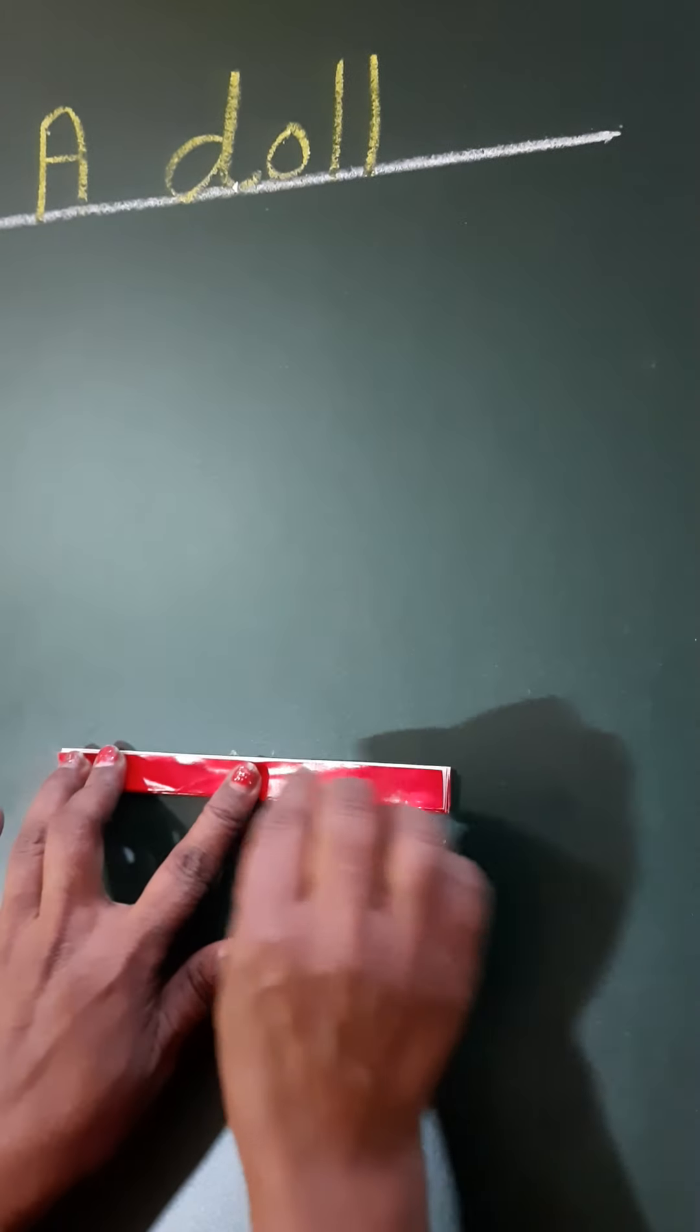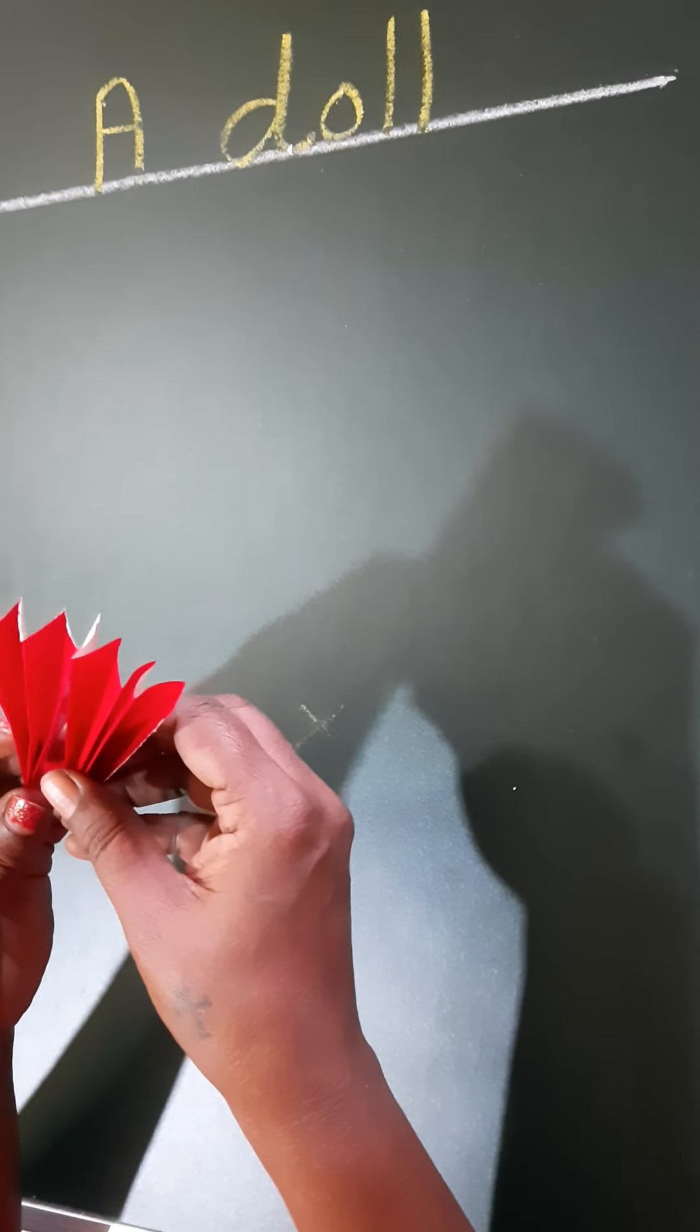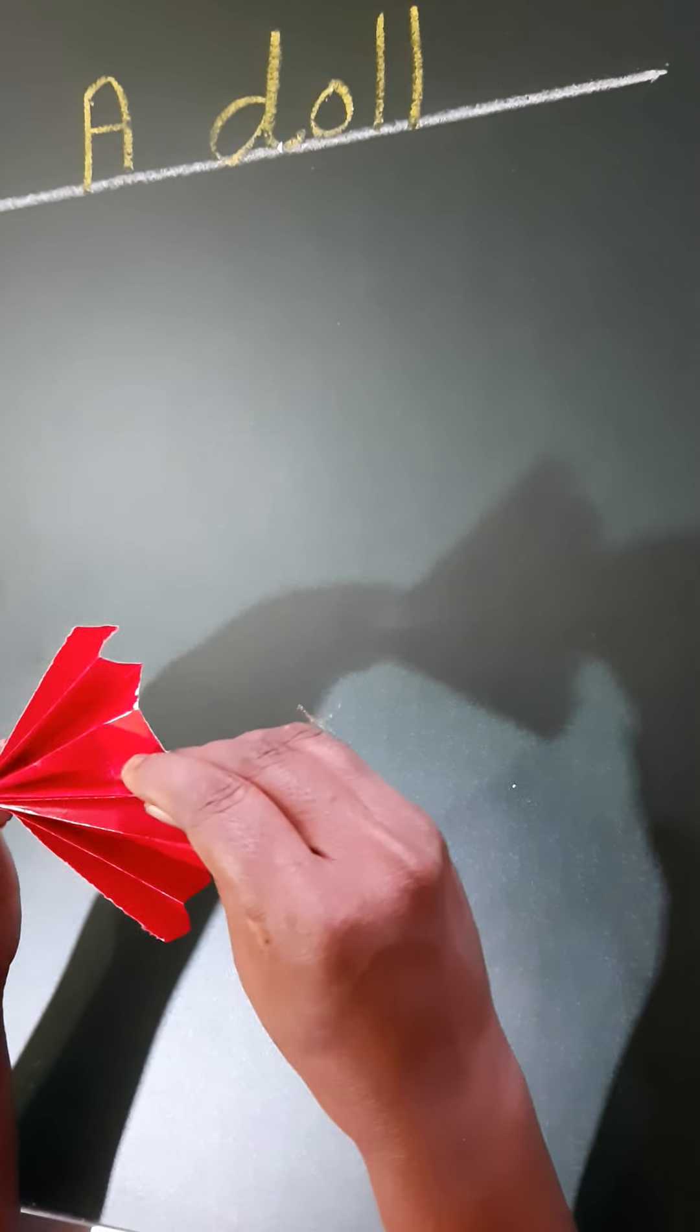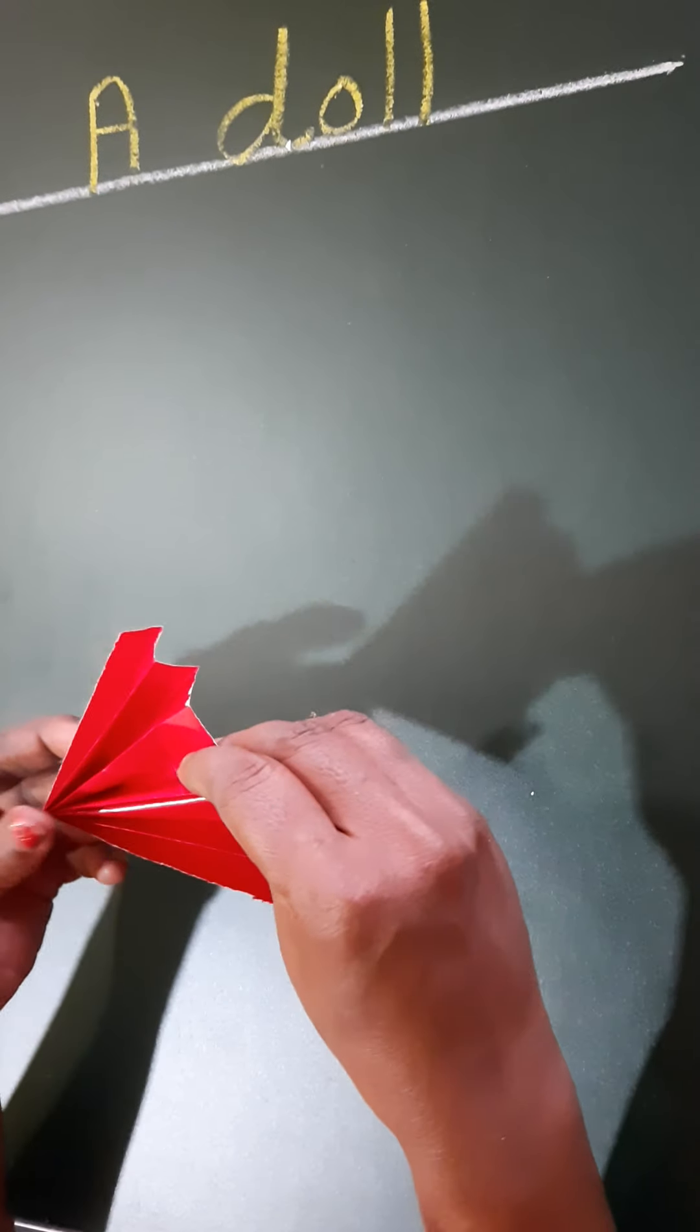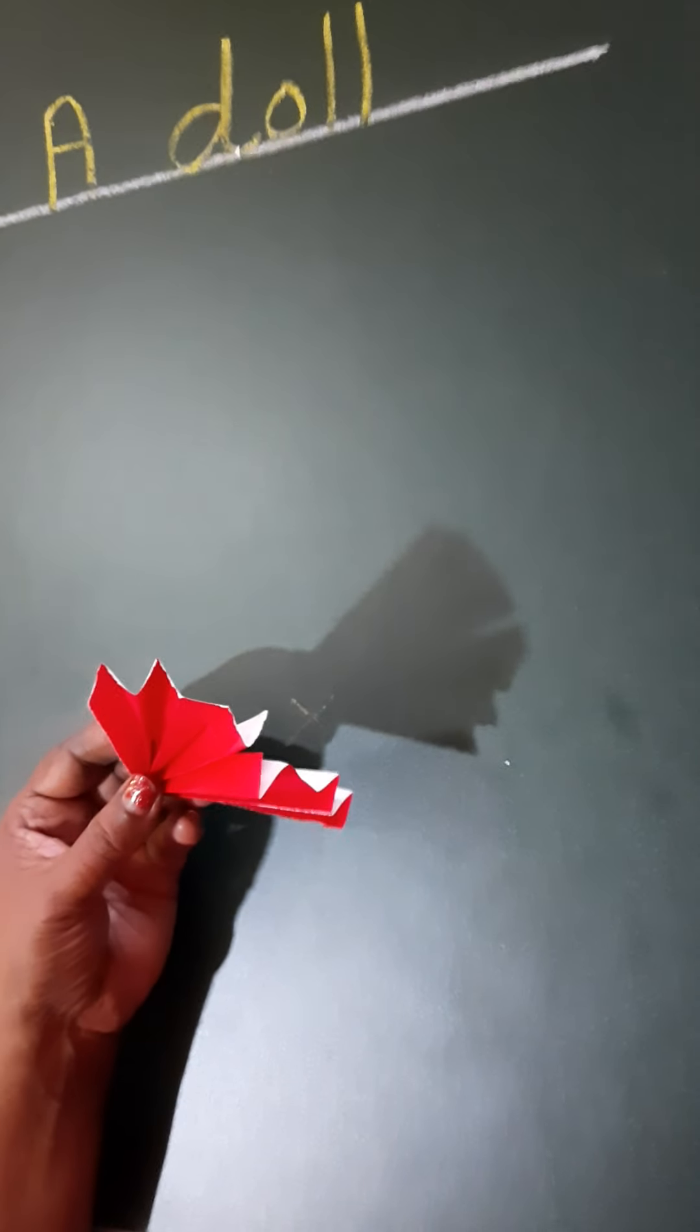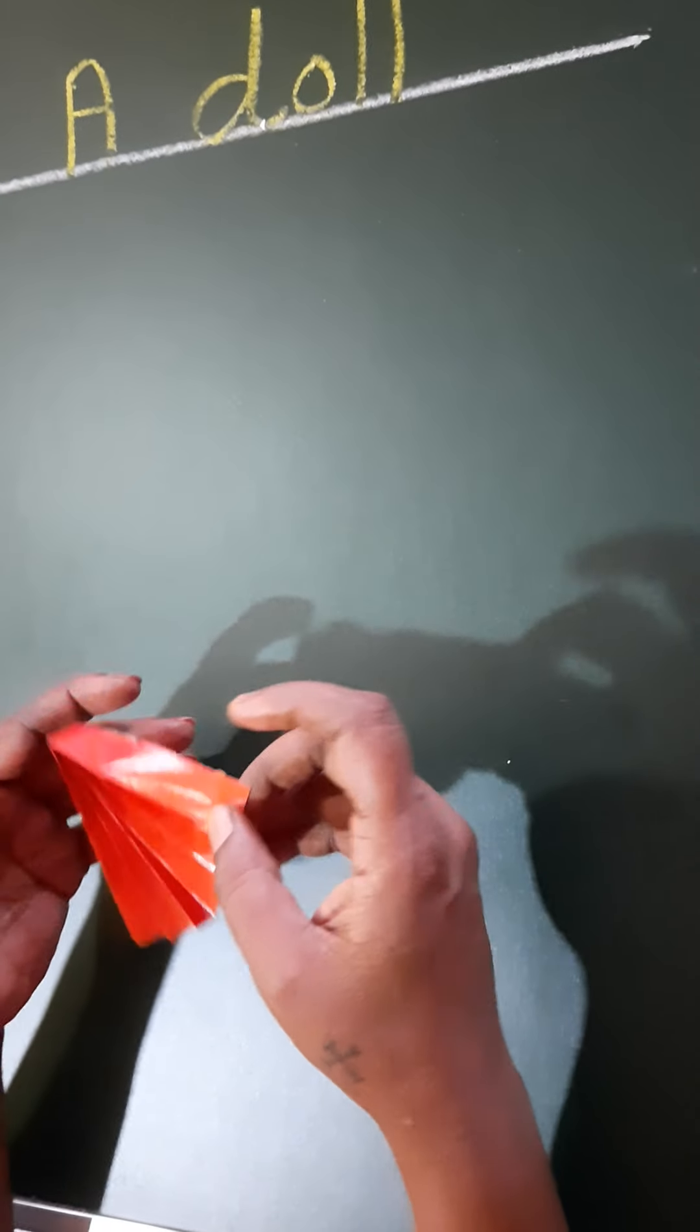After that, what you do, you have to fold the paper like this. Apply gum and fold it. So I have already applied gum and folded the paper like this. So it looks like a fan.